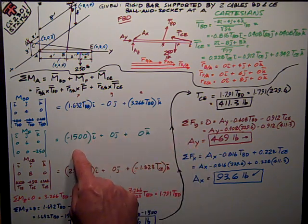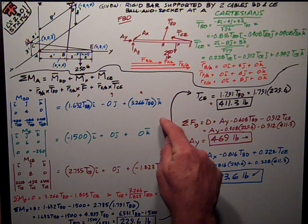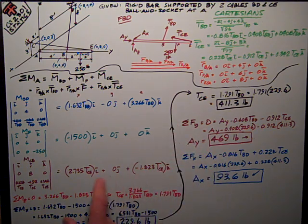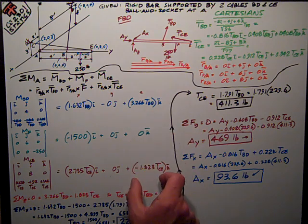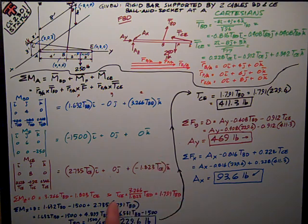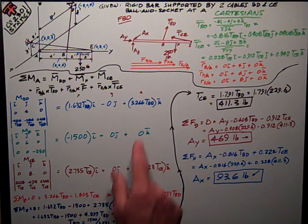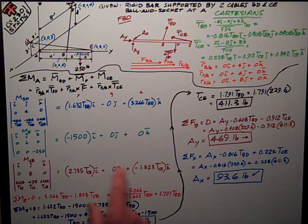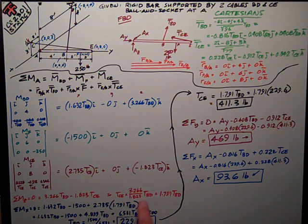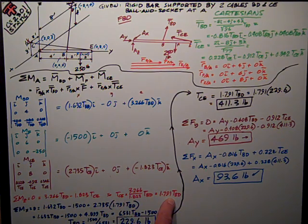Okay, here I have two unknowns in one force, but here I have two unknowns that I can equate to each other. This is the sum of the moments in the Z direction, so I've written it out here in an equation form so I can evaluate it, and I come up with 3.266 TBD minus 1.823 TCE. I rearrange, and I solve for TCE in terms of TBD, 1.791.